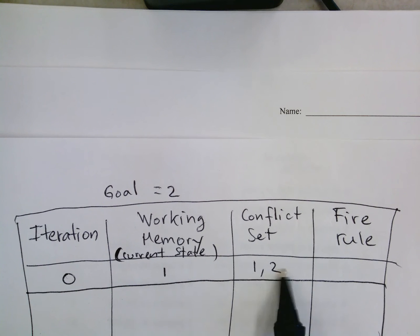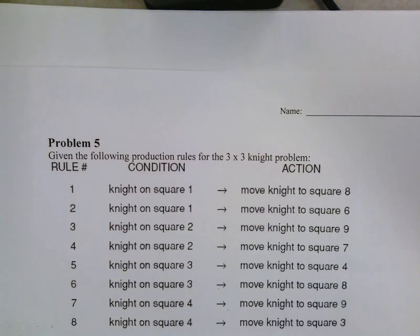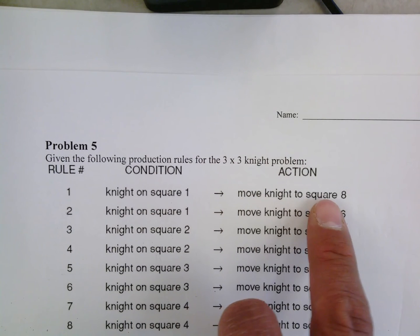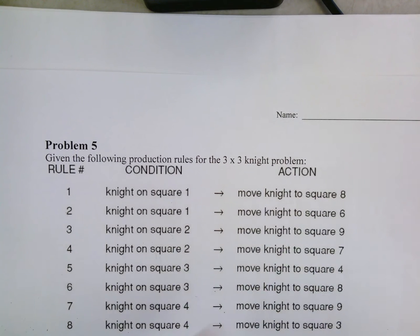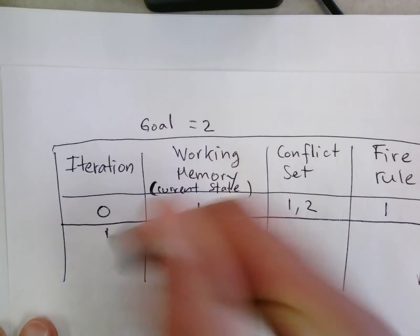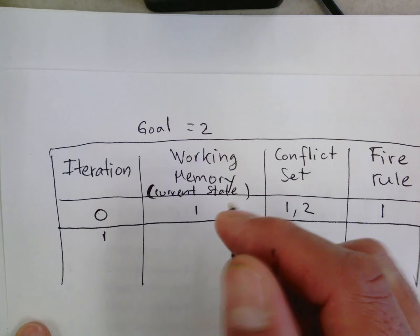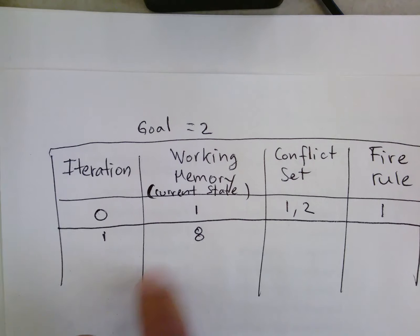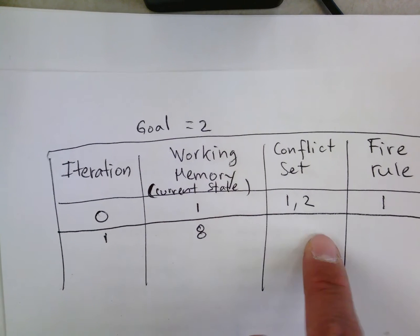We execute the first rule that matches, which is rule one. By firing rule one, we move the knight to square eight. So after iteration one, the current state is now square eight.